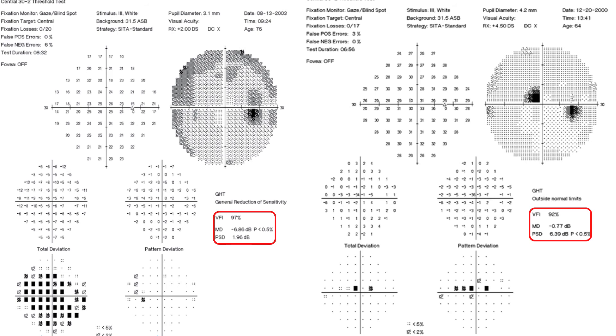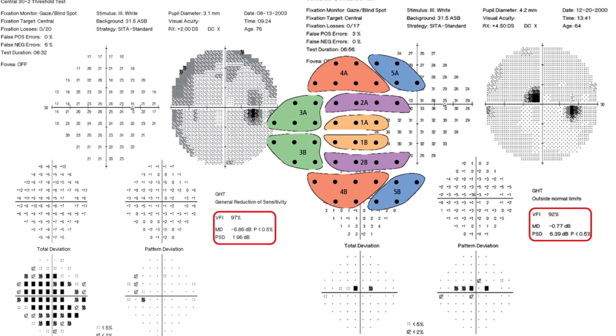On the right side, we have only a few depressed central points with a mean deviation of minus 0.7 and VFI of 92%. The GHT on the right side is reported as outside normal limit because the points in zone 1A threshold value have been lower than the threshold value in zone 1B.